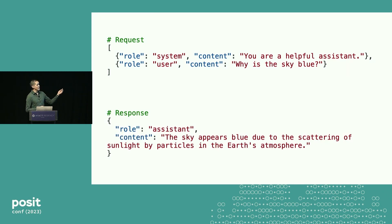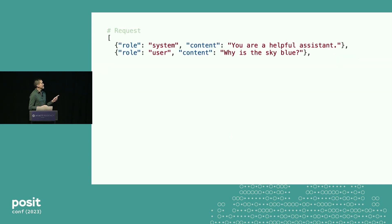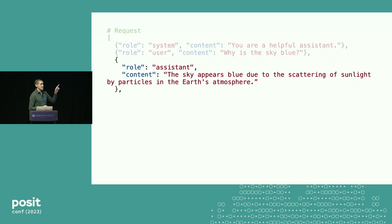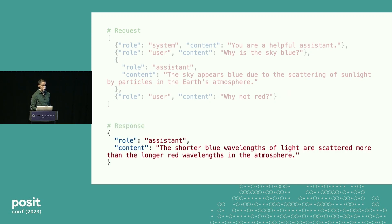It sends that message to the API and gets a response back: role: assistant, content — an answer the LLM has generated. To turn this into a conversation, we make another request. On their servers they don't keep track of the state of the conversation — it's stateless. So we make another request, include the previous information, tack on the reply it gave us earlier, and then ask our next question: role: user, "why not red?" Every time I add something to the conversation, I send it the whole previous conversation.